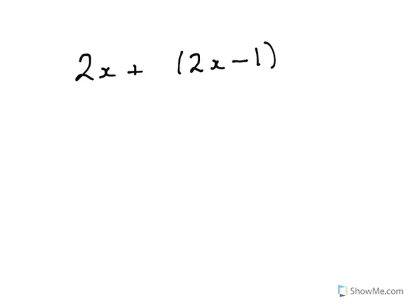Let's say we've got an expression that looks like this: 2x plus brackets 2x minus 1. How are we supposed to simplify this? We've got x in two different places, which means we've got to simplify it so we only get x in one place instead of two.